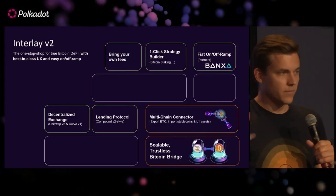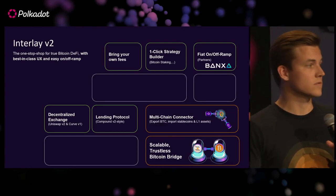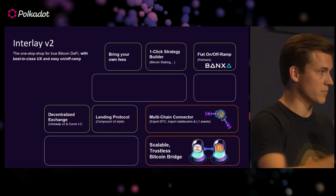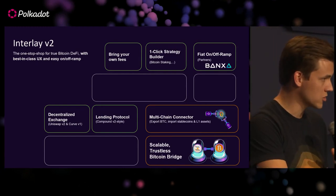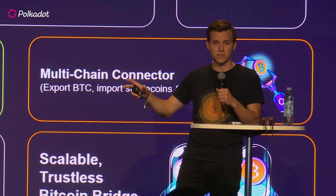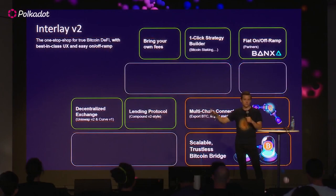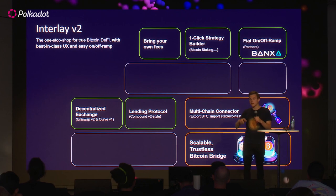Interlay has been spearheading efforts to get fiat on- and off-ramp providers into the ecosystem. We've secured a deal with Banxa, one of the leading players in the space, for 10 Kusama parachains — that's already being integrated. In Polkadot, a bounty proposal should be going live over the next few weeks to provide funding for integrations for up to 20 parachains, so users can easily gain access, test the application, and not worry about where to get the gas token.